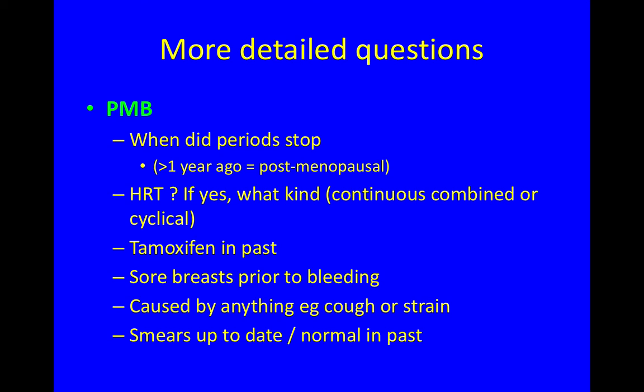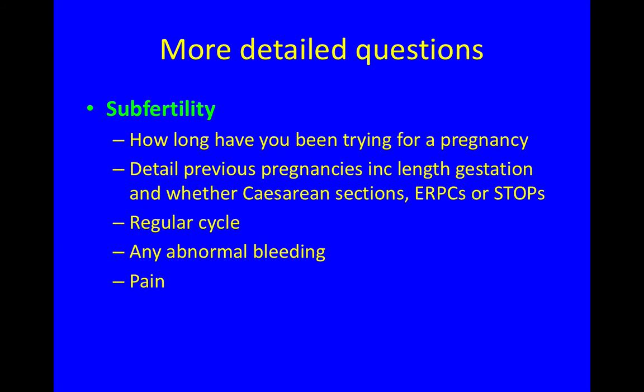In the scenario of post-menopausal bleeding: when did your periods stop? Are you using HRT, and if yes, what kind — continuous combined, cyclical, or oestrogen only? Have you used tamoxifen in the past? Have your breasts been sore prior to the bleeding — this indicates likely late ovarian activity. Has the bleeding been caused by anything like coughing or straining — this indicates possible atrophy. And are your smears up to date or were they normal in the past?